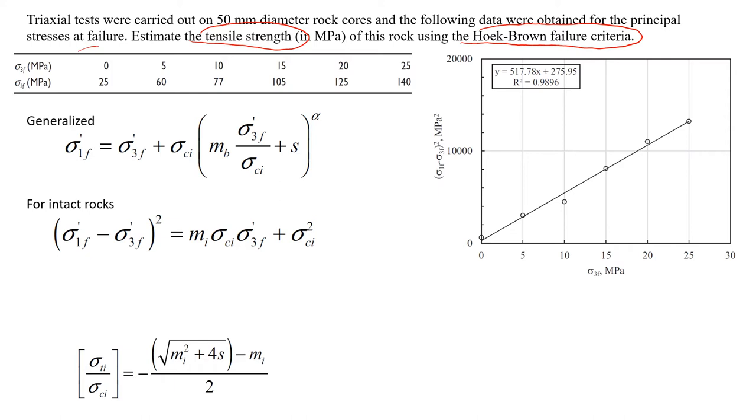So first, let's look at the data we're presented. It's shown here in the table. We have six different test results. For each test, we measured confining pressure, minor principal stress, and major principal stress, sigma 1.